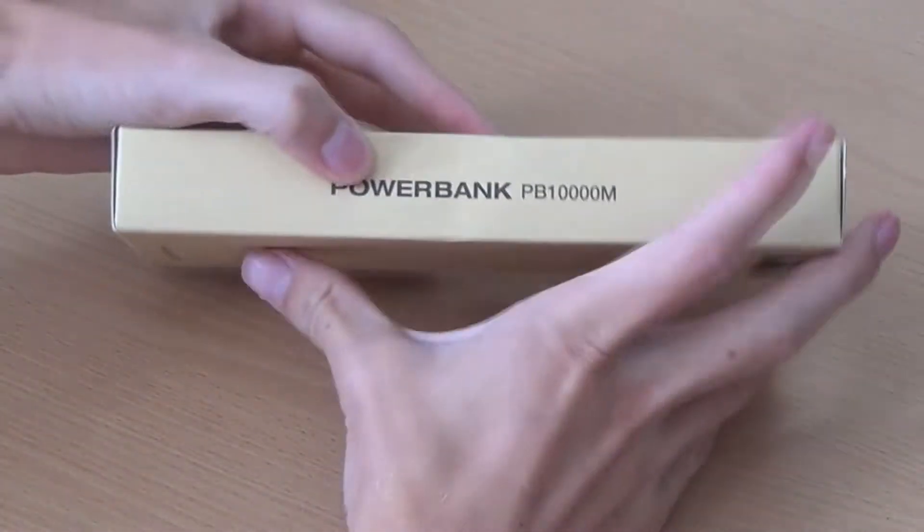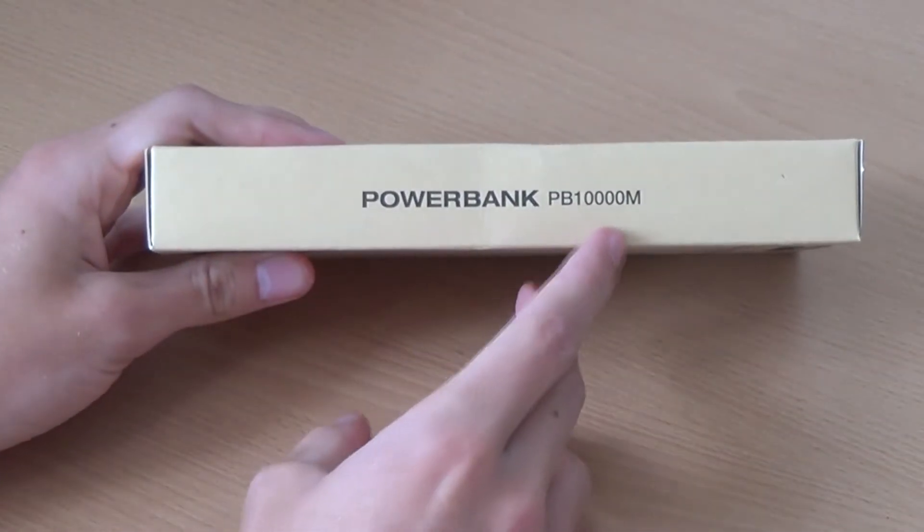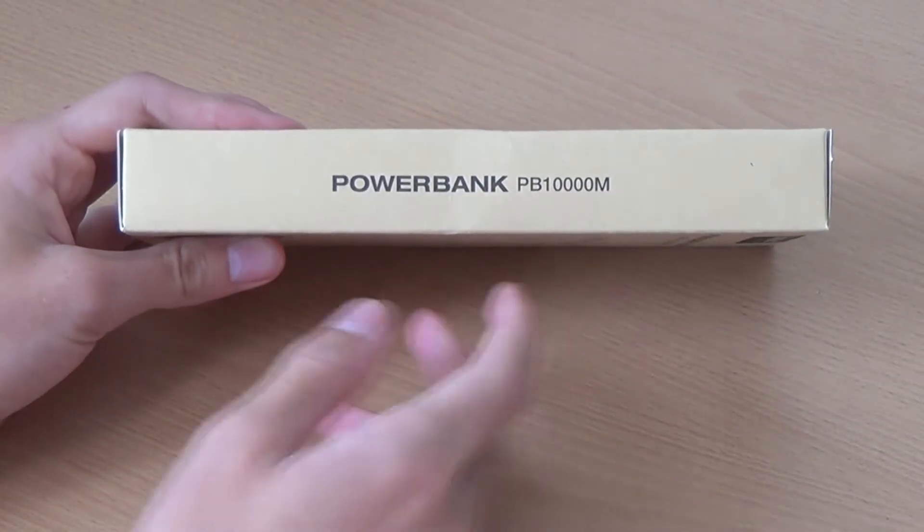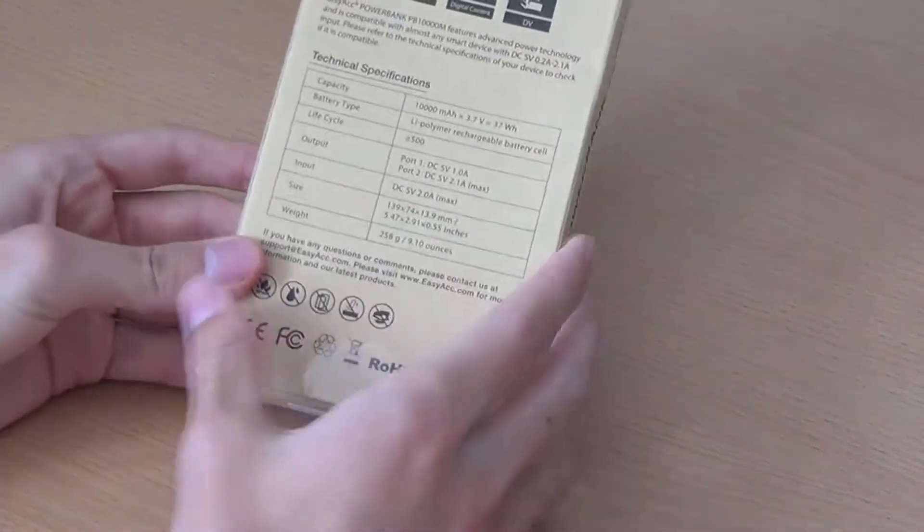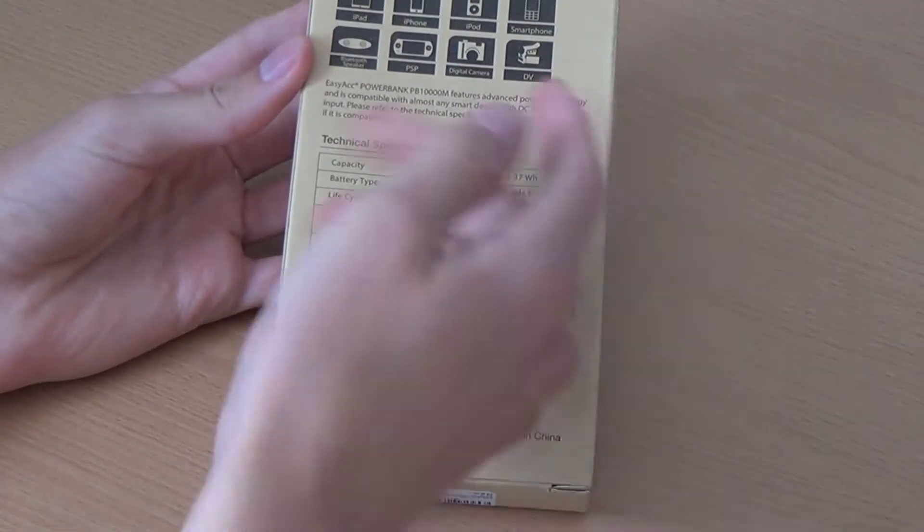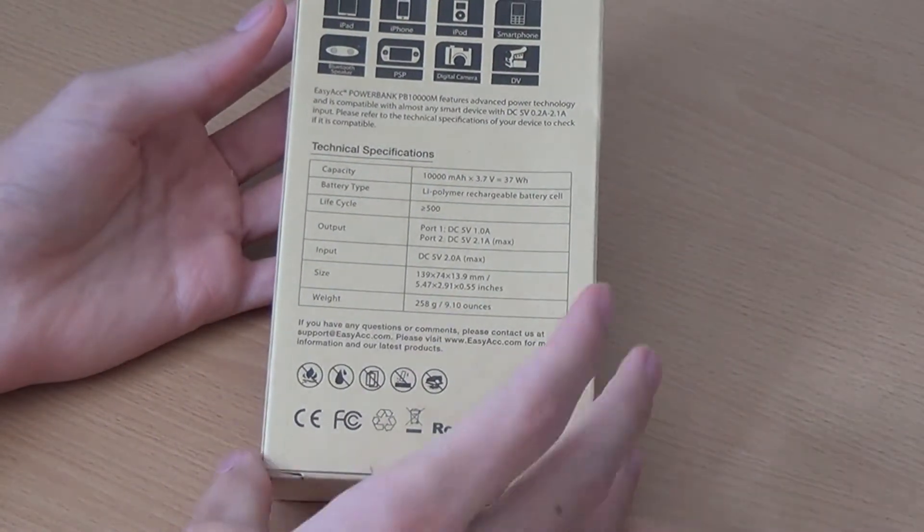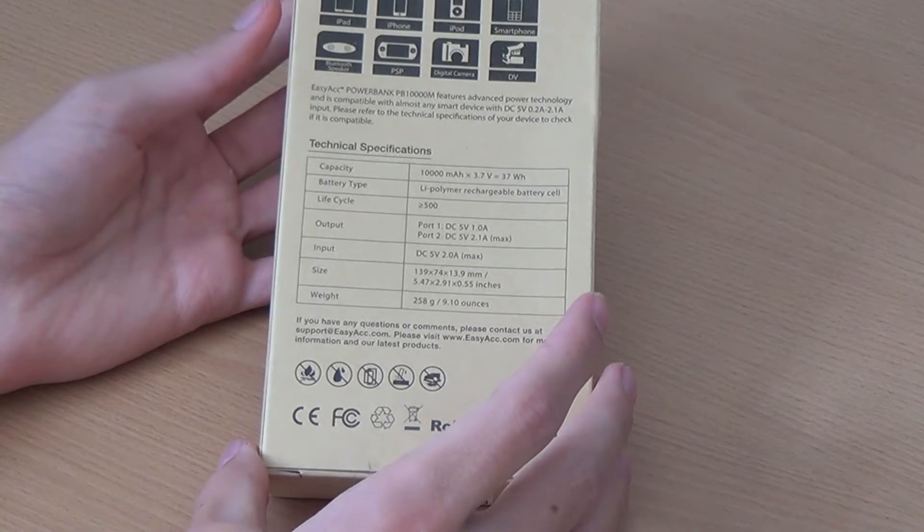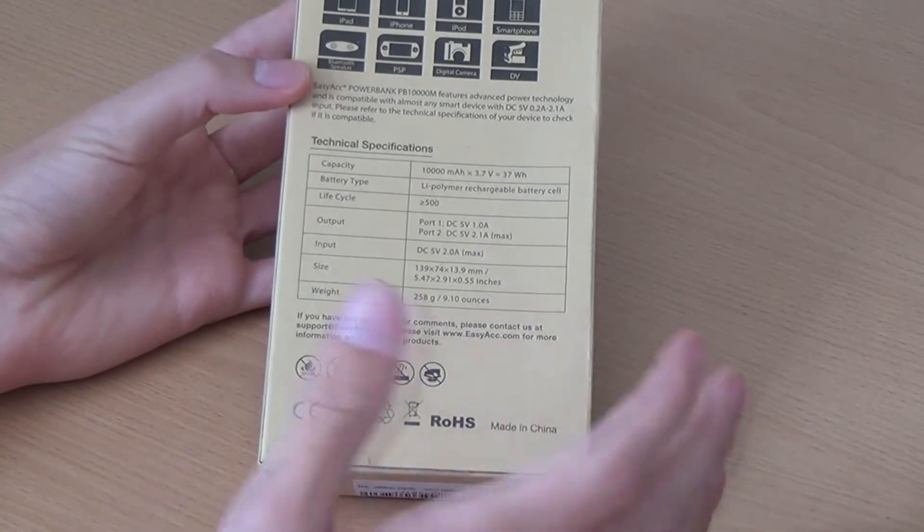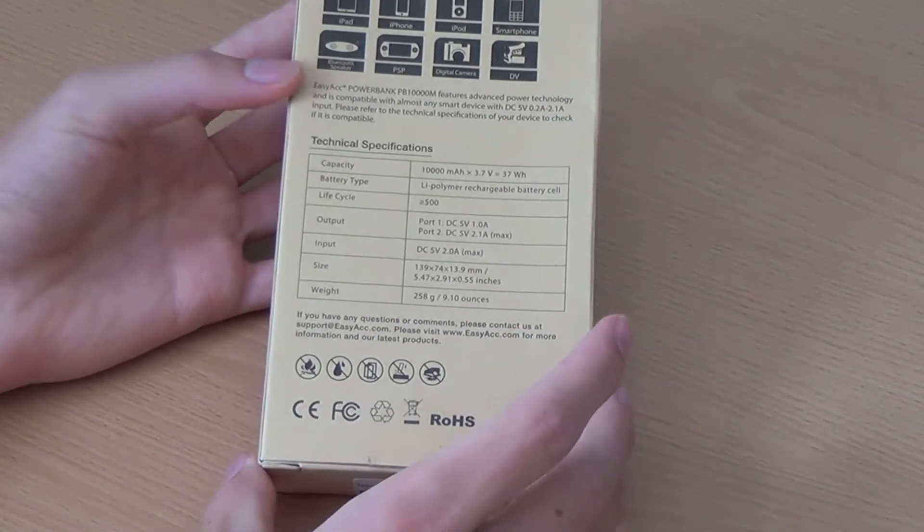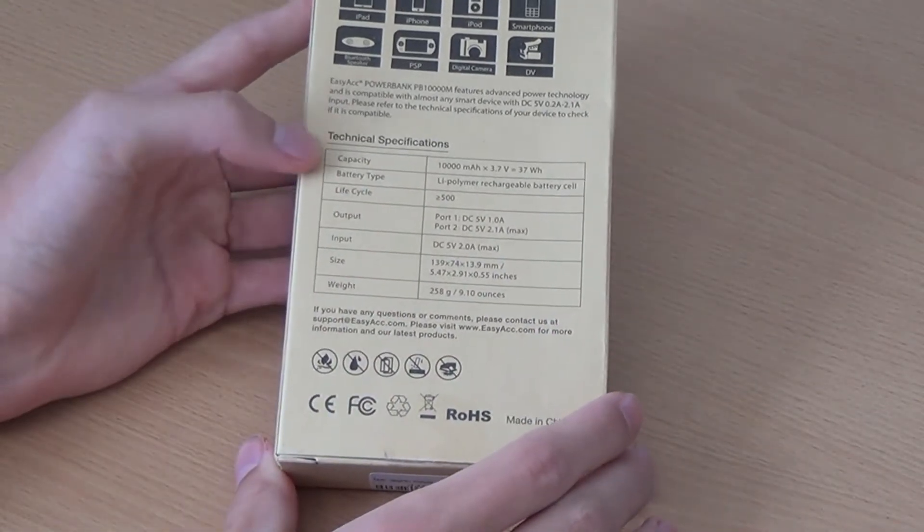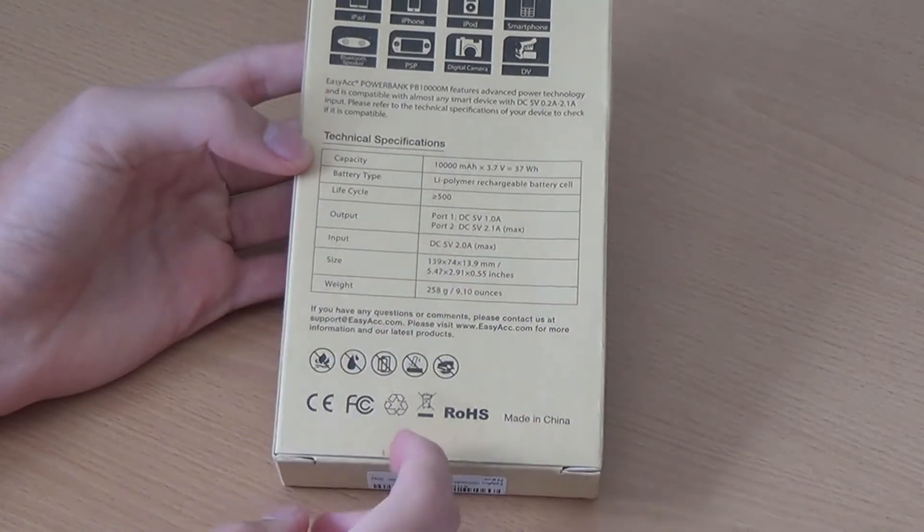On the side we've just got again the Power Bank PB10,000M, and on the back here we've got some more details. We've got compatibility - what it's compatible with: iPad, iPhone, iPod, smartphone, Bluetooth speakers, all of those. And you've got some technical specifications down at the bottom.